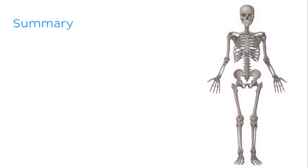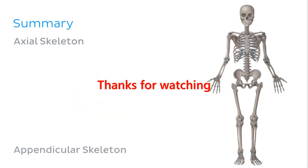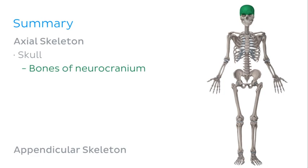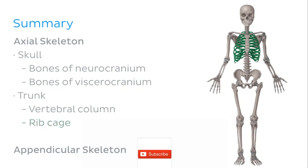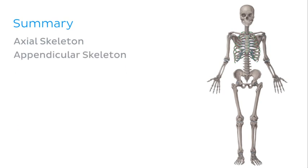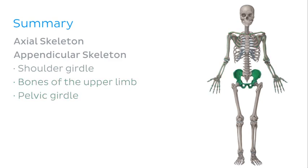That's us finished for today. To summarise: the skeleton can be divided into two main parts — the axial skeleton and the appendicular skeleton. The axial skeleton consists of the skull (divided into the neurocranium and viscerocranium) and the trunk (the vertebral column, ribcage and sternum). The appendicular skeleton consists of the shoulder girdle, the bones of the upper limb, the pelvic girdle and the bones of the lower limb. We looked at the main bones of each region and discussed some important clinical conditions affecting the skeletal system.